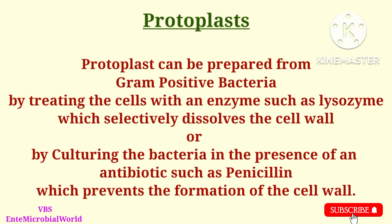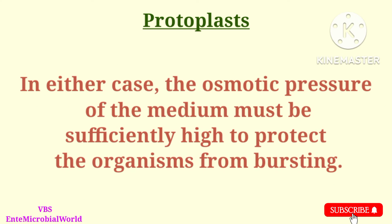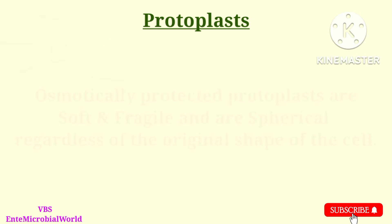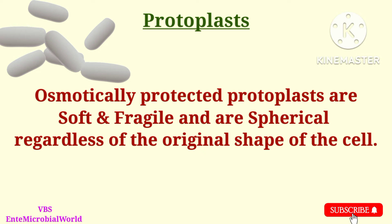Protoplasts can be prepared from gram positive bacteria by treating the cells with an enzyme such as lysozyme, which selectively dissolves the cell wall, or by culturing the bacteria in the presence of an antibiotic such as penicillin, which prevents the formation of the cell wall. In either case, the osmotic pressure of the medium must be sufficiently high to protect the organisms from bursting.